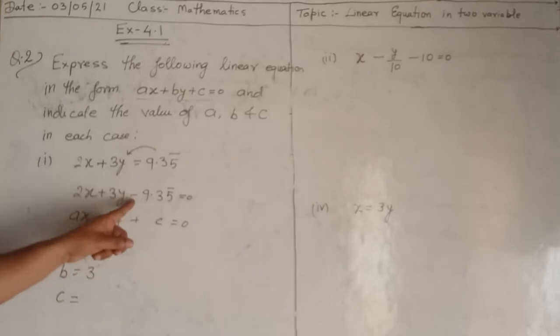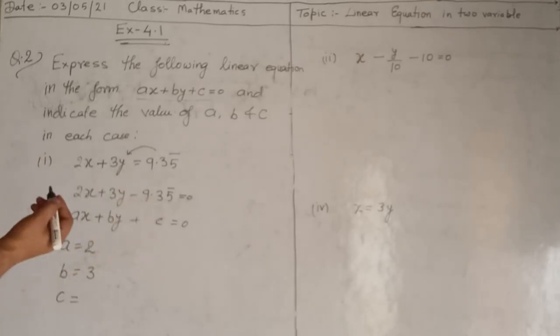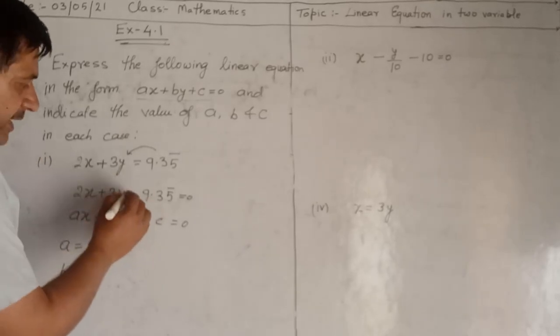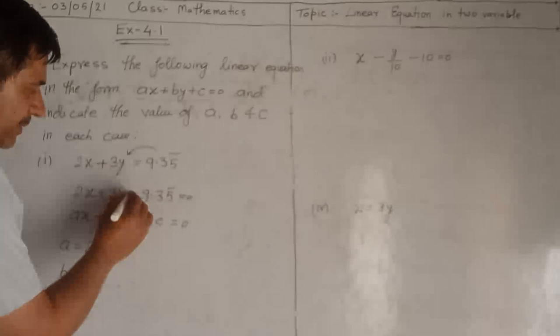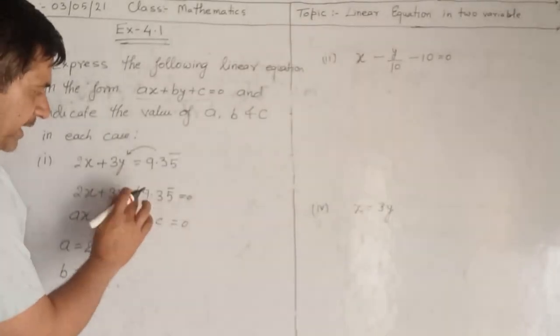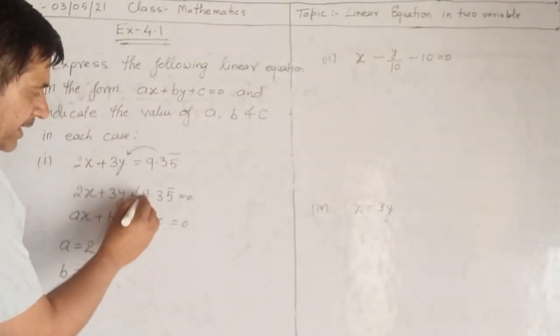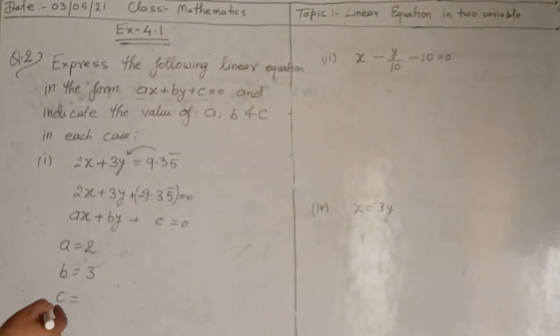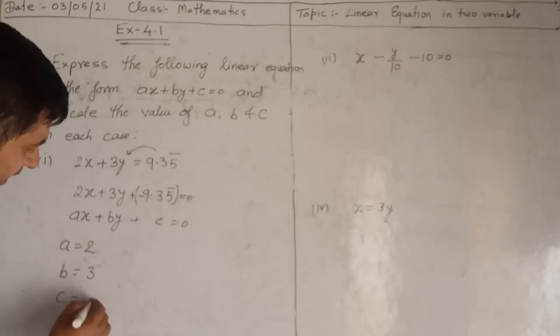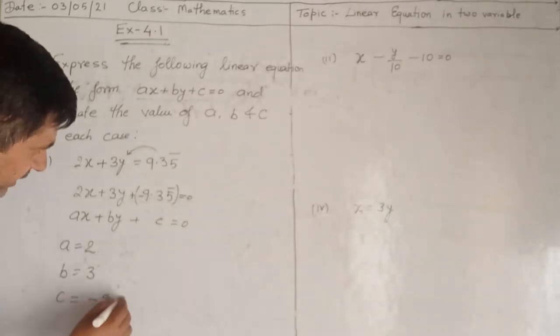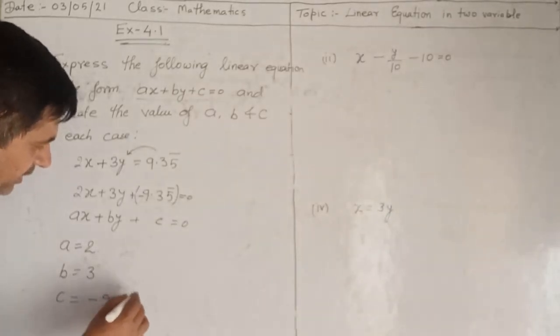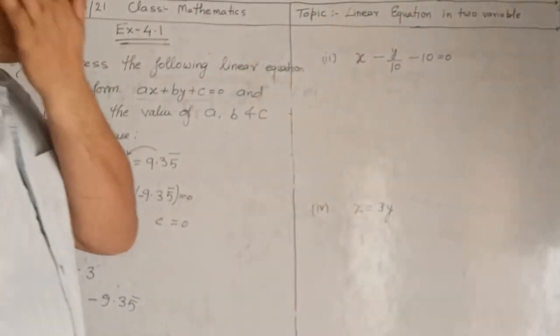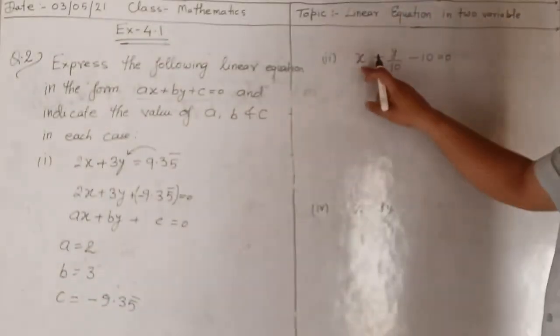Comparing with ax plus by plus c equals to zero: the value of a is 2, the value of b is 3, and the value of c is minus 9.35 bar.